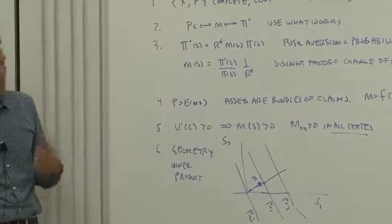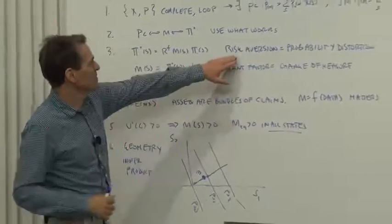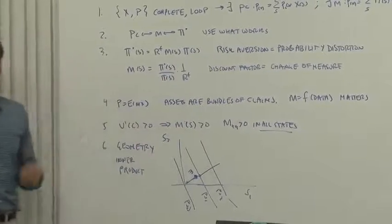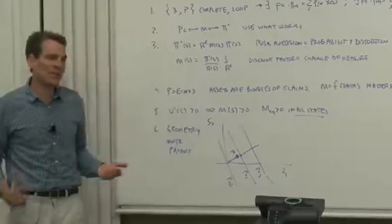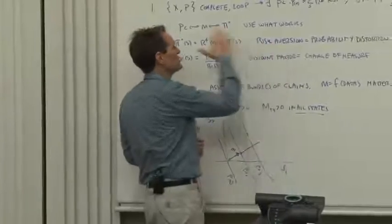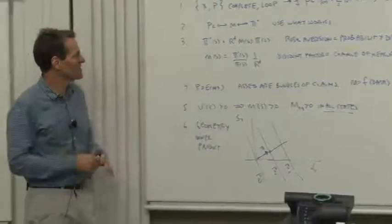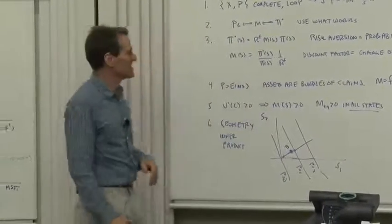The risk neutral probabilities were very beautiful. They represent risk aversion as a probability distortion. And when you start thinking about psychology and how people answer surveys, people often pay too much attention to hurtful events. That's exactly what risk aversion says they ought to do.